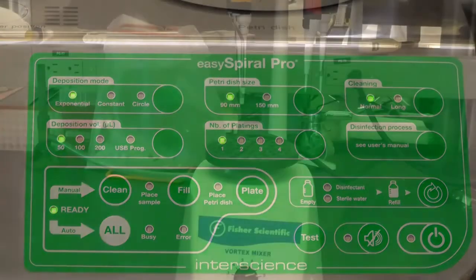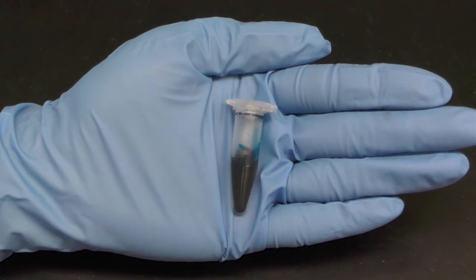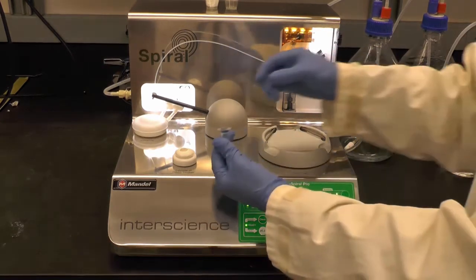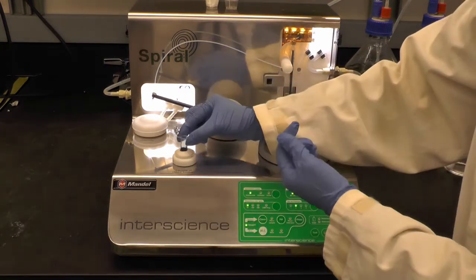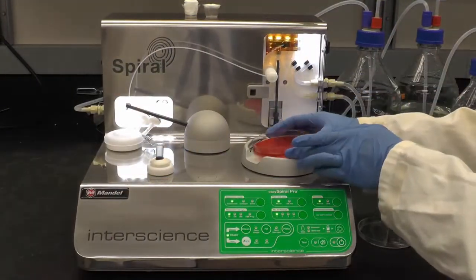Vortex your sample and transfer an adequate amount to a 1.7 milliliter eppendorf tube. Set the eppendorf tube onto the sample holder making sure the applicator tube can be fully submerged.